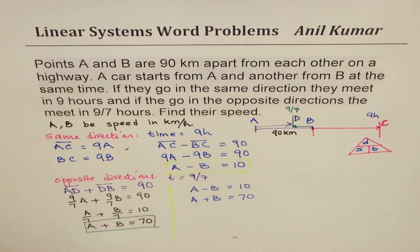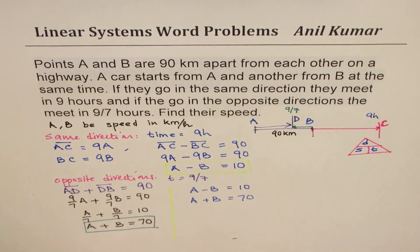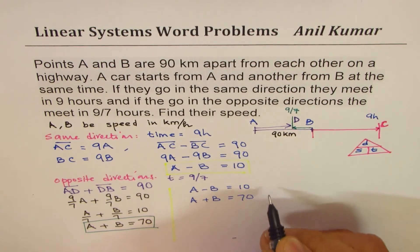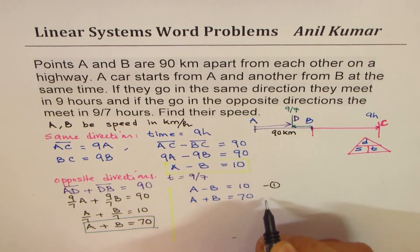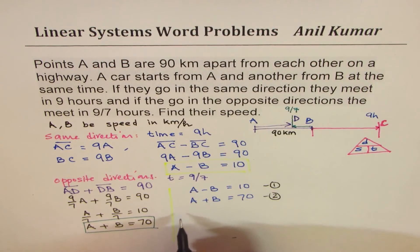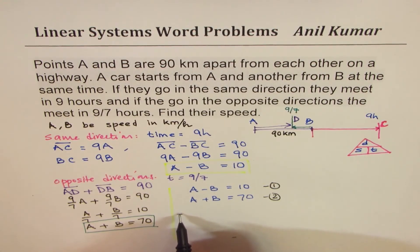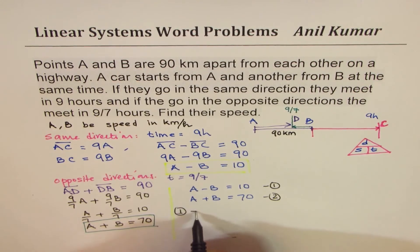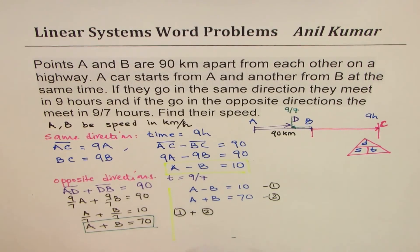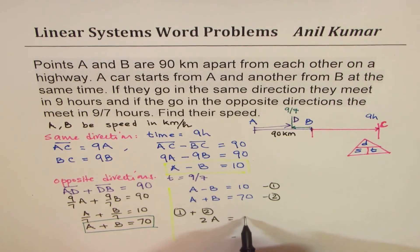Now we can easily find A and B. Now simple. So let's say this is our equation number 1, this is equation number 2. If I add 1 and 2, equation number 1 plus equation number 2, what do I get? I get twice A is equals to 80, or A equals to 40, half of 80.